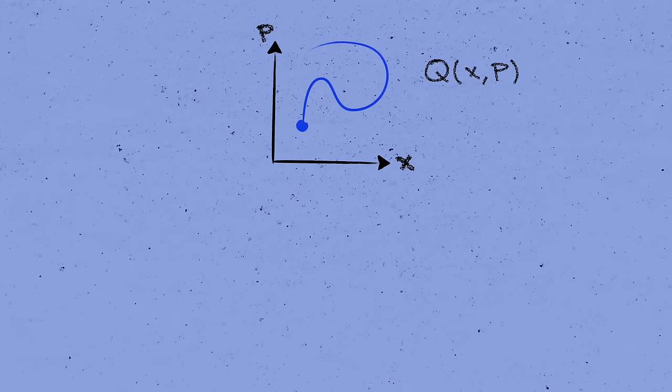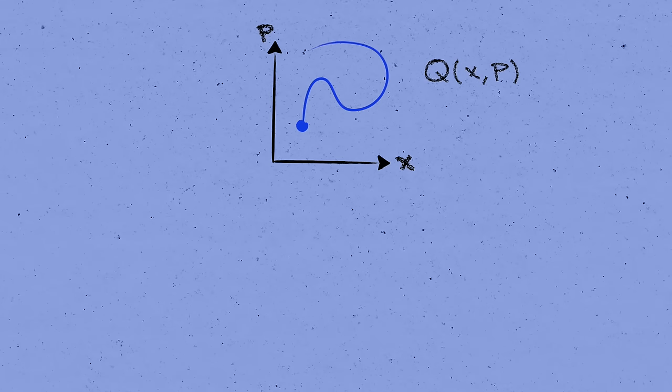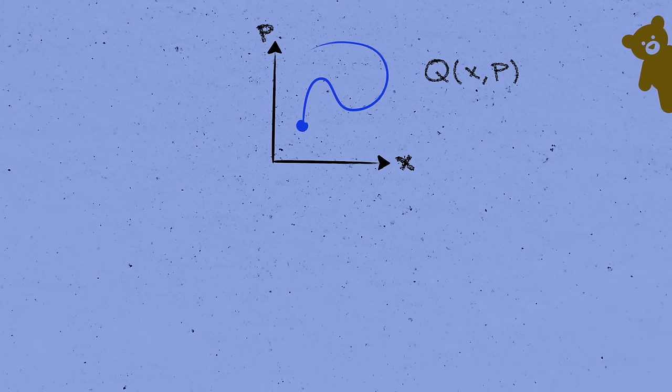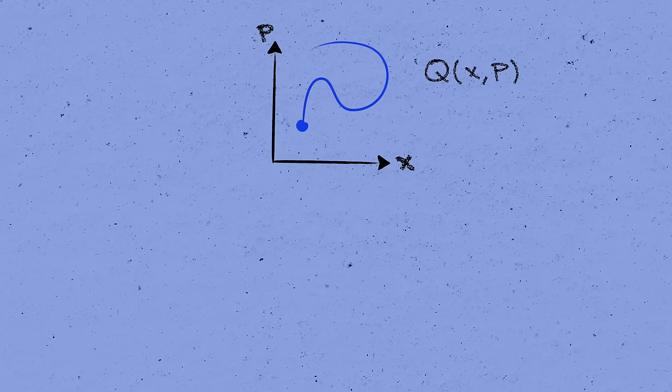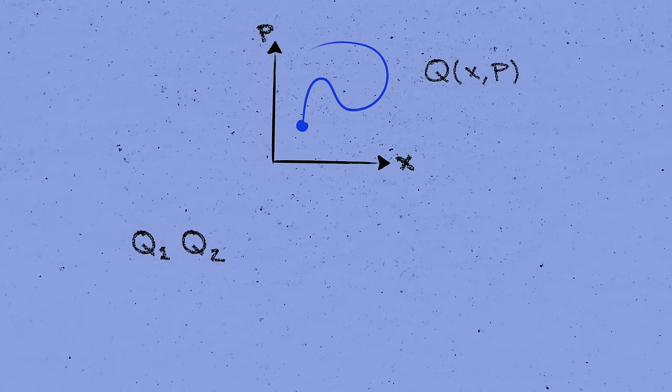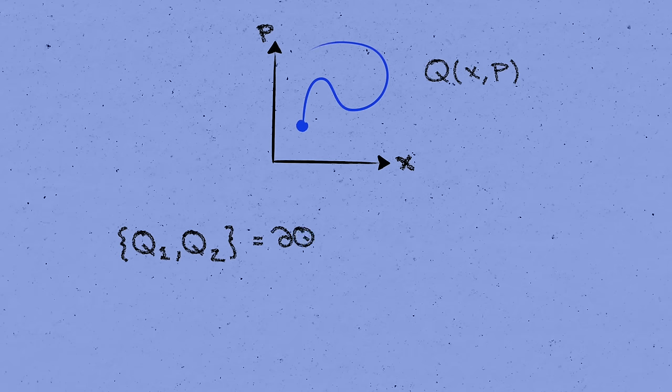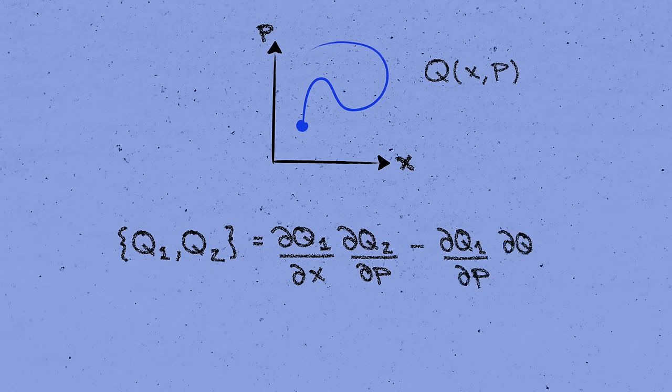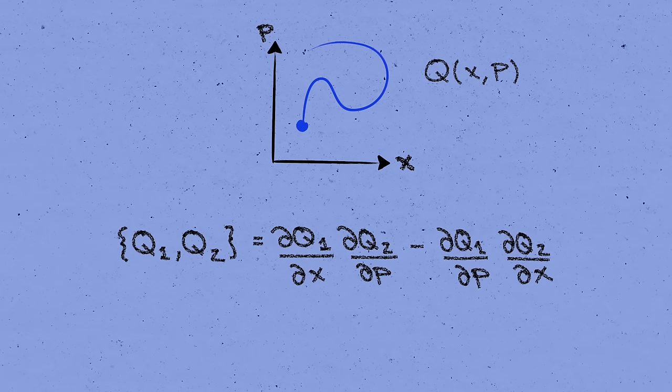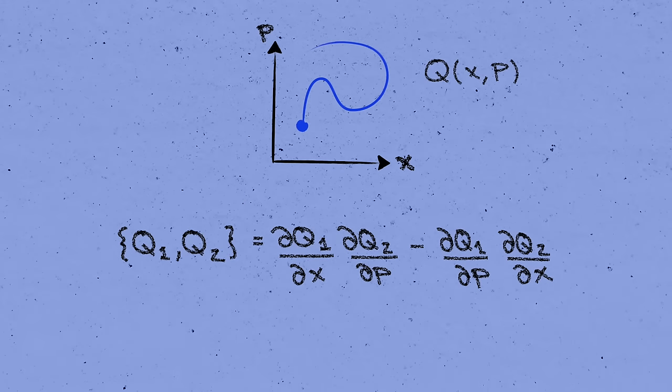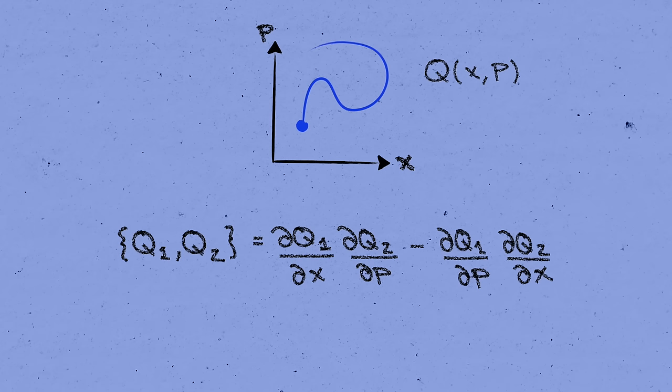With all that in mind, I'm now going to write down the definition of the Poisson bracket. It might look like a totally random expression at first, but bear with me. We'll quickly see how useful it is. It's a sort of multiplication that takes two of these functions, q1 and q2, and returns another. We'll denote it by these curly braces, and it's given by the derivative of the first thing, q1, with respect to x, times the derivative of the second thing, q2, with respect to p, minus the reverse: derivative of q1 with respect to p, times the derivative of q2 with respect to x.